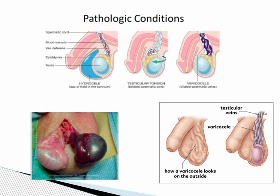Testicular torsion is another urologic emergency. The testicle actually twists upon the spermatic cord, also cutting off arterial flow, which can unfortunately cause necrosis of the testicle. It usually presents in the ER with severe pain — unilateral testicular pain. They'll do an ultrasound, and since we want to prevent tissue necrosis, it's usually a surgical emergency. They'll take the patient in to release it essentially.